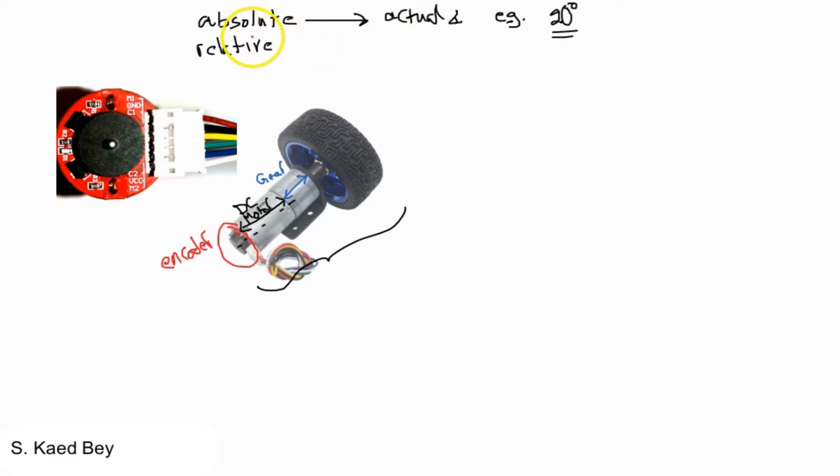Whereas the relative encoders, which are also referred to as incremental encoders, provide information about the motion of your DC motor shaft in both direction and angular velocity. So the relative encoder can detect whether your motor is in clockwise or counterclockwise position in addition to the angular velocity as well.